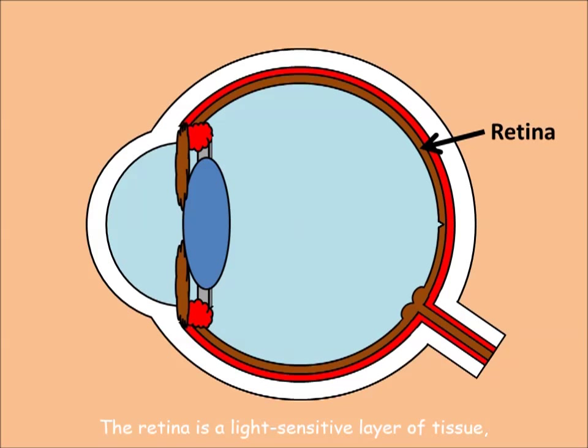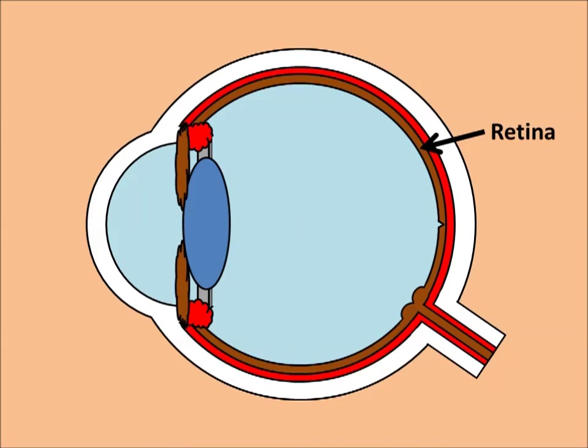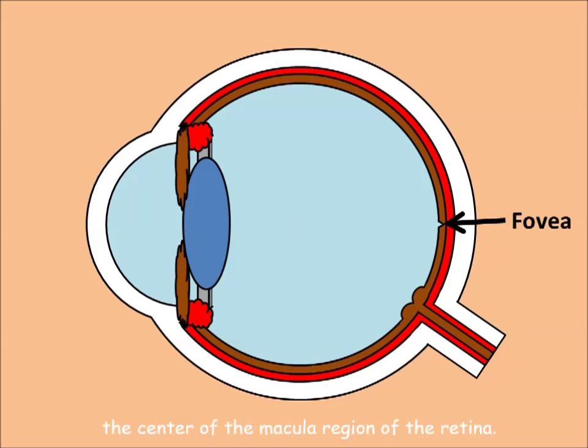The retina is a light-sensitive layer of tissue lining the inner surface of the eye. The fovea is located in the center of the macular region of the retina.